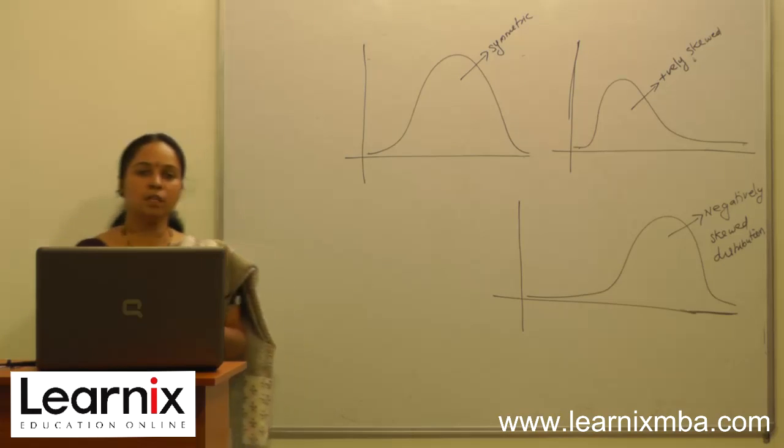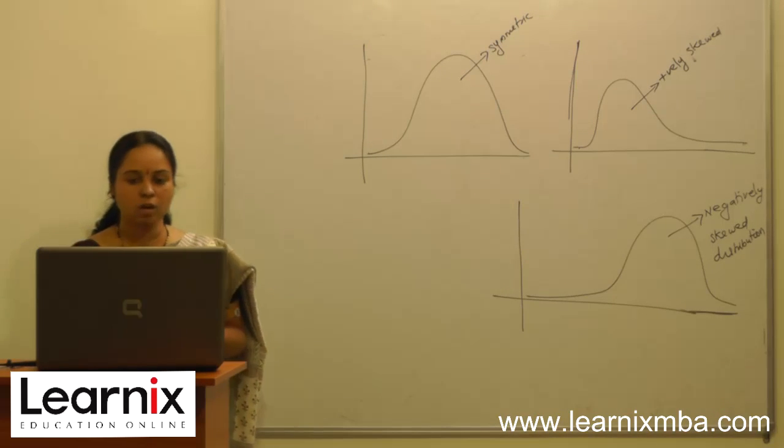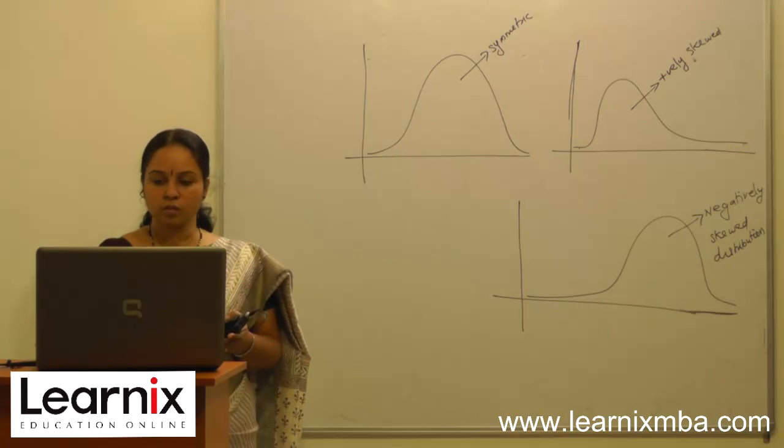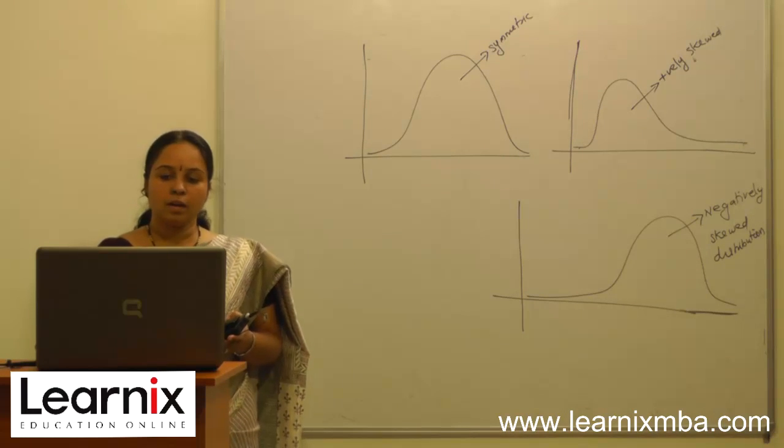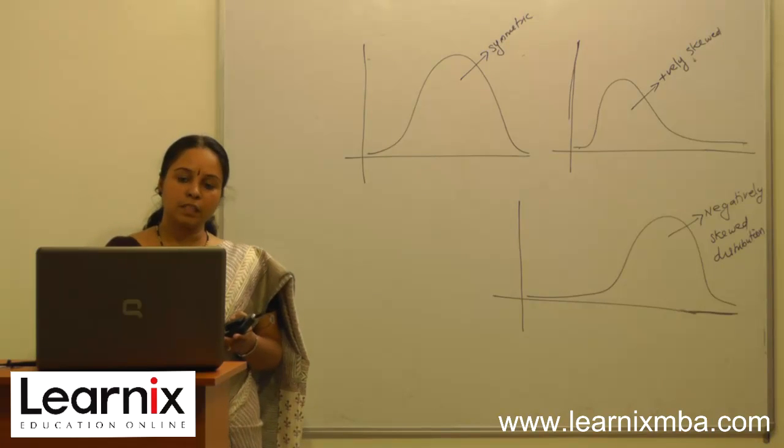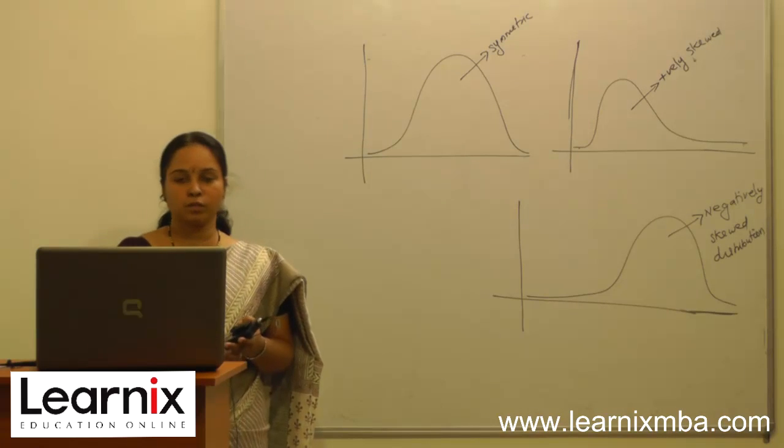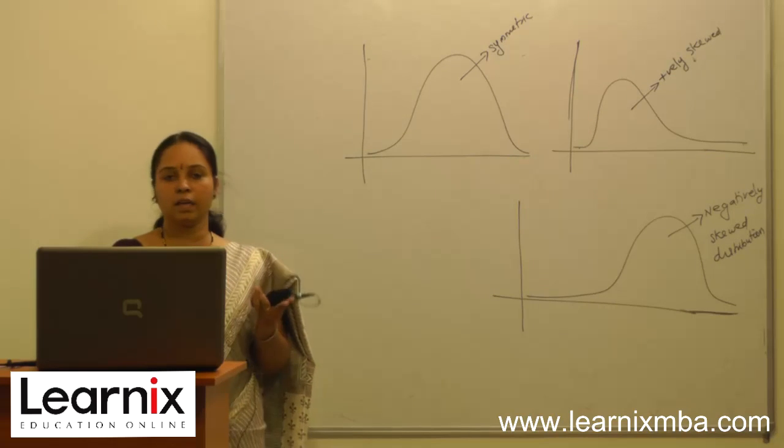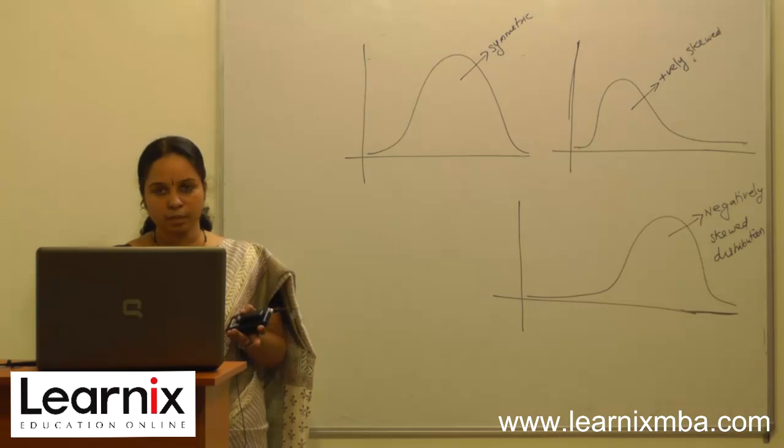Skewness can be measured by using so many techniques. One such technique is called Carl Pearson's method and the other method is Bowle's coefficient of skewness. The values of skewness range from minus 1 to plus 1. The lowest value is minus 1 and the highest value is plus 1, and it can take any value between minus 1 and plus 1.